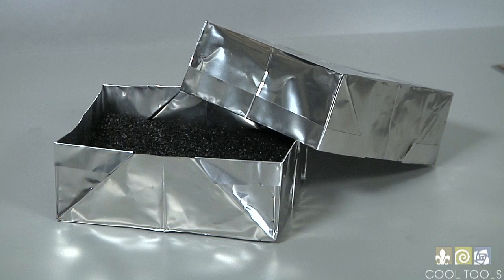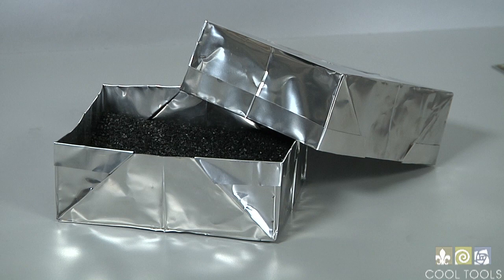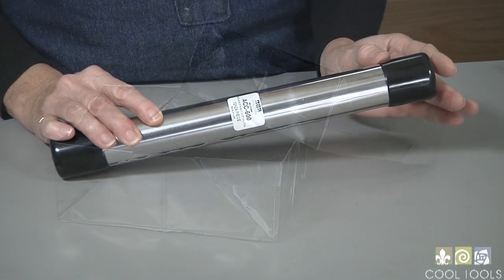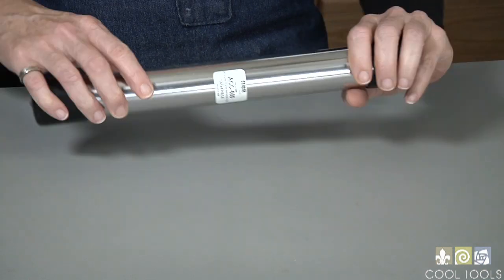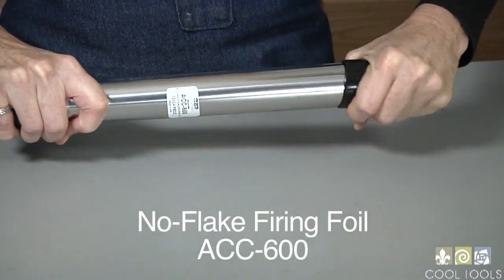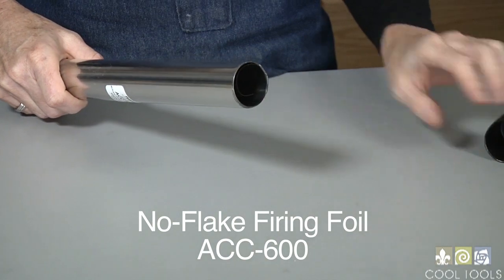This box is made from a special high temperature alloy that does not flake so it won't mess up the inside of your kiln. This special material is called no flake foil and you can make just about any size custom firing pan from it.